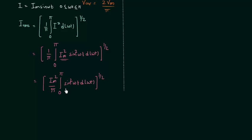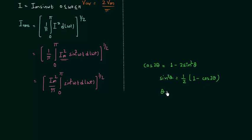Integration of sin²(ωt) is not possible directly, so I will use the formula for cos 2θ. Cos 2θ equals 1 minus 2 sin²θ, so sin²θ equals (1 minus cos 2θ)/2. Here θ is equal to ωt, so sin²(ωt) equals (1/2)(1 minus cos 2ωt). In the next step I will replace sin²(ωt) by (1/2)(1 minus cos 2ωt).